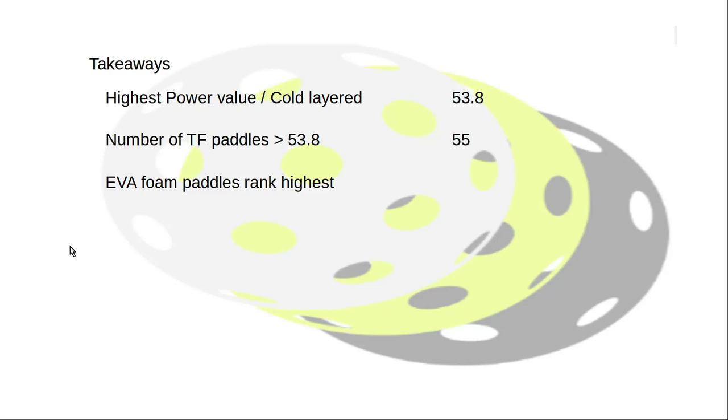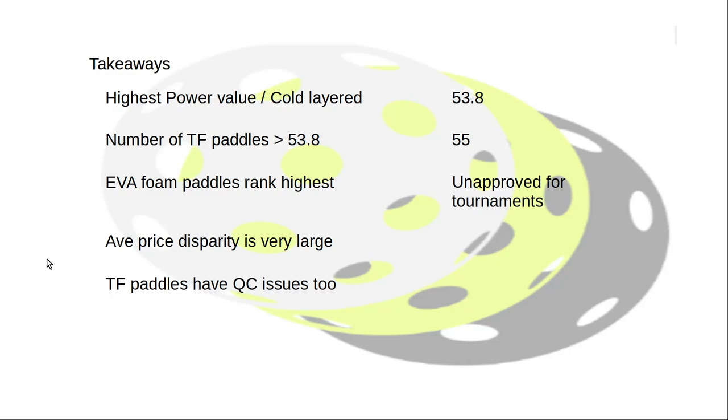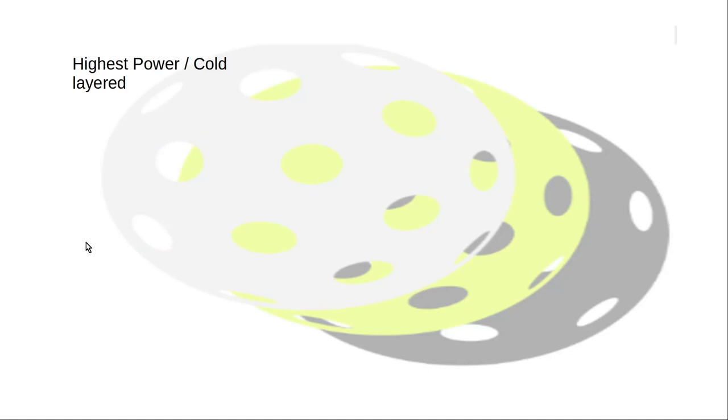EVA foam paddles rank the highest, but they're unapproved for tournaments. There's two listed and the average price is pretty big. I mean, it's just a huge difference in price between the two. Thermoformed paddles now also have quality control issues. So breakage, I think, is not what it used to be. And I think there's other issues that come about here and there. So it's not the end-all, be-all process.